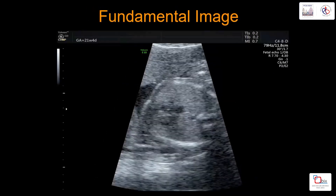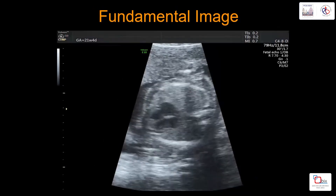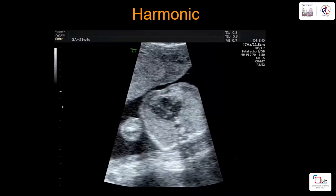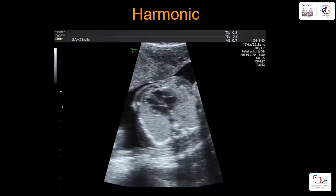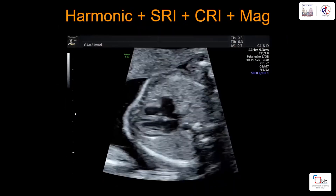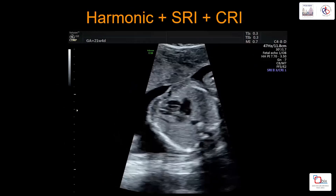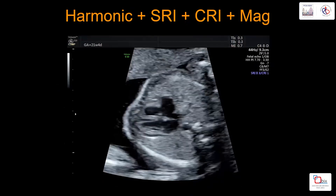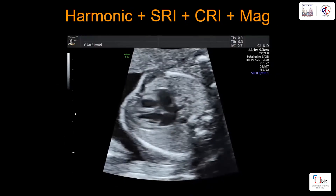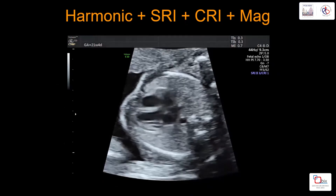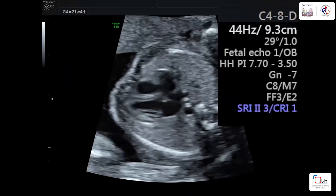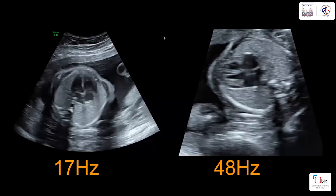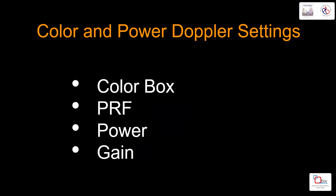This is the fundamental image without any adjustment — notice how grainy it is and how difficult it is to differentiate between the wall and cavity of the heart. Switching on harmonic imaging clears the cavity. Then adding SRI further improves the image. After magnification, we can see the cavity clearly, the interventricular wall, and the lateral wall of the heart. By adjusting the image, we have moved from 17 frames per second to 48 frames per second.